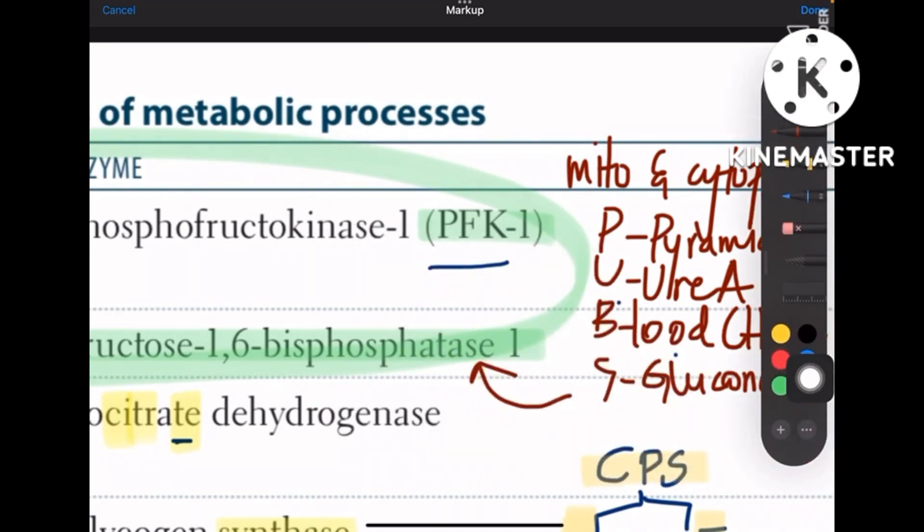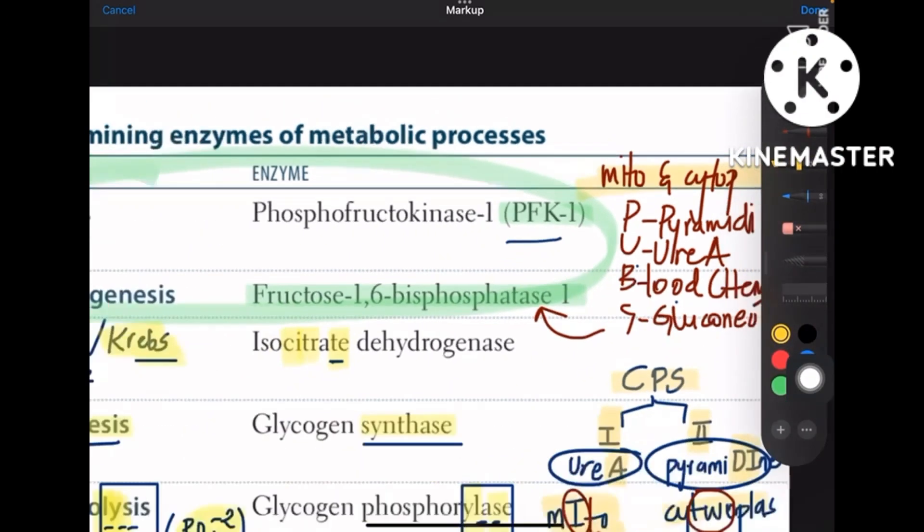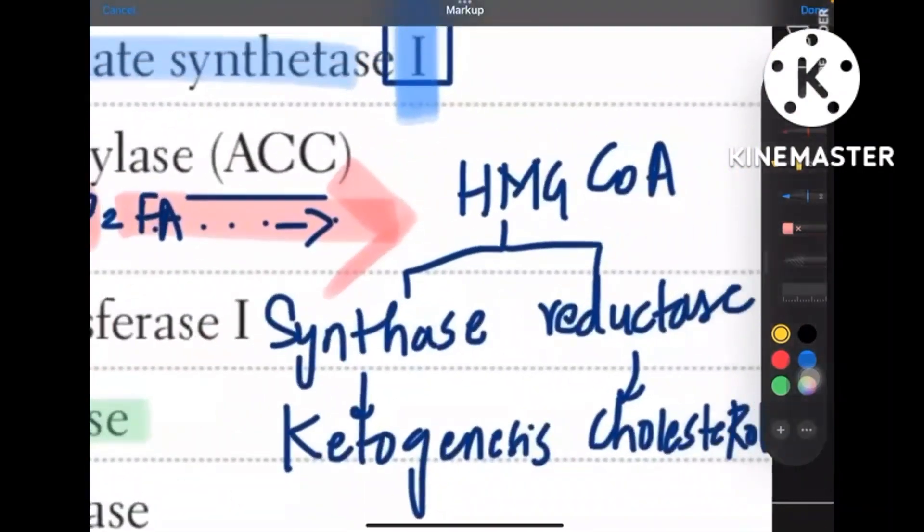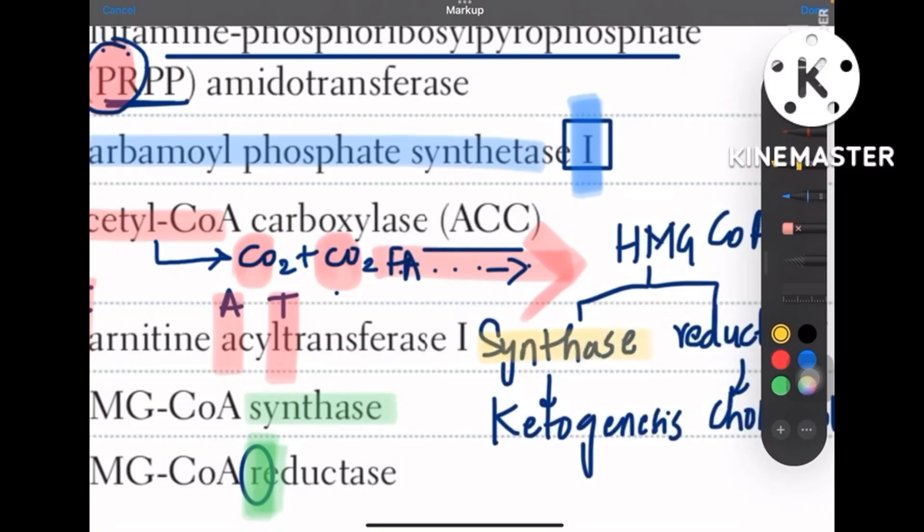And coming to HMG-CoA, HMG-CoA synthase is for ketogenesis whereas reductase is for cholesterol. Ketogenesis or ketone body synthesis is for HMG-CoA synthase.